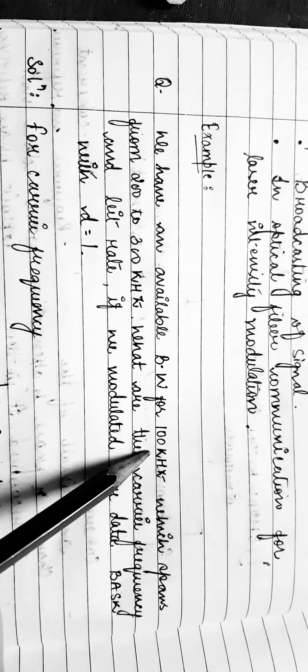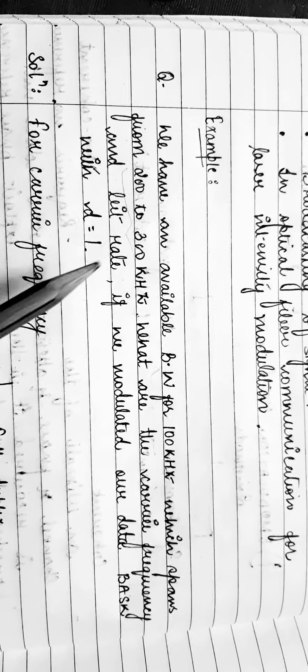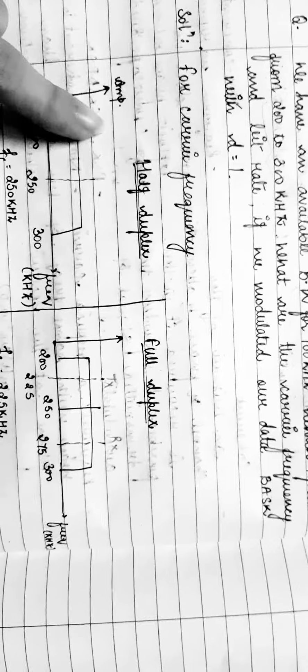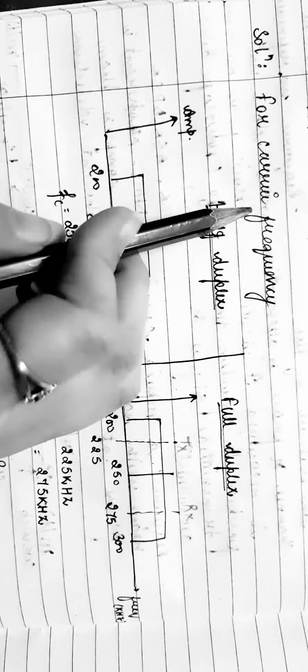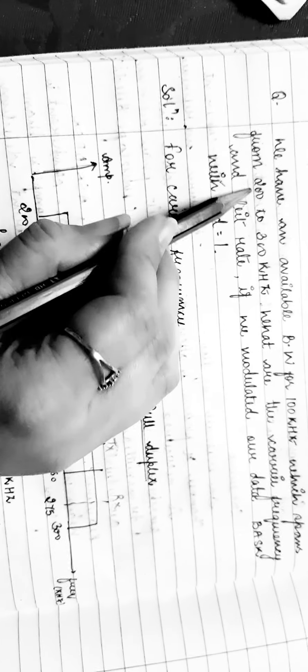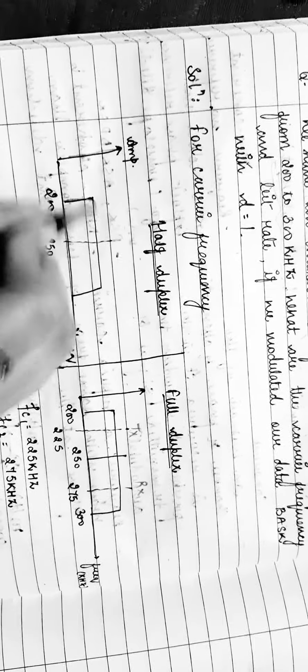We have been given the bandwidth that is 100 kilohertz, and it spans from 200 to 300 kilohertz. D is equals to 1 for binary ASK. We have a graph between amplitude and frequency in kilohertz. The frequency is ranging between 200 to 300 kilohertz, which means we can represent it with the help of 200 and 300 kilohertz.